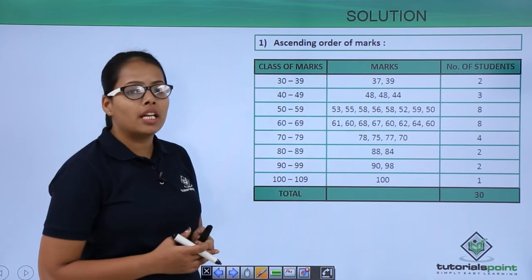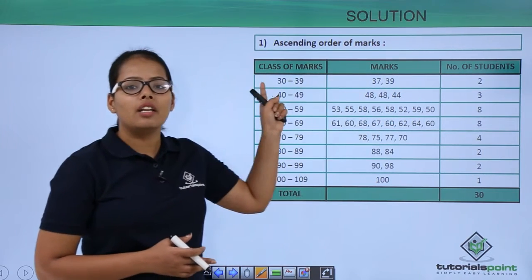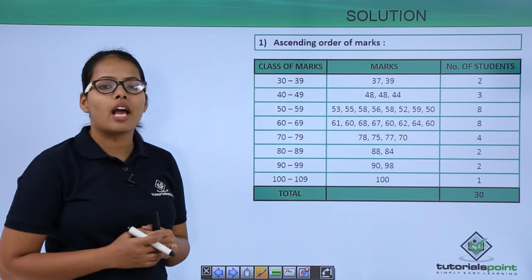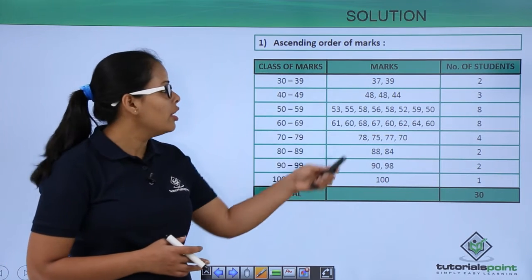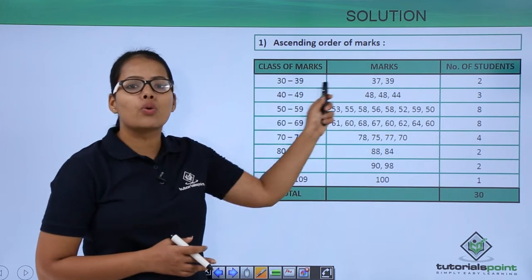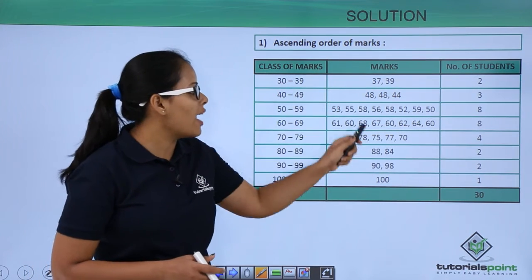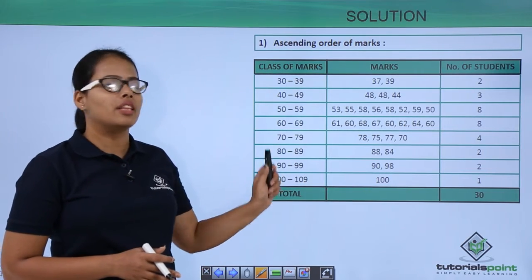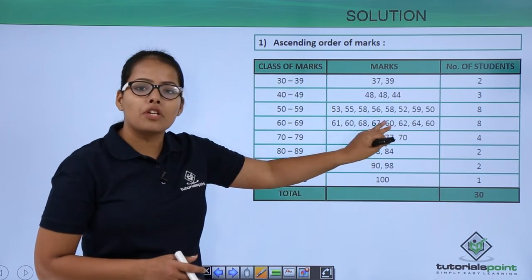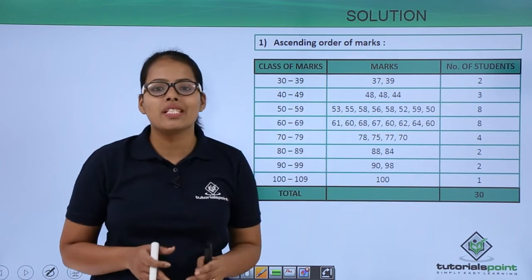Students getting marks between 30 and 39 — there is 37 — so there are two students in the interval 30 to 39. In the interval 40 to 49, you can see 48, 48, and 44, so there are exactly three students. You do this for all intervals, listing the observations falling under each one. This gives you the frequency for each class interval.